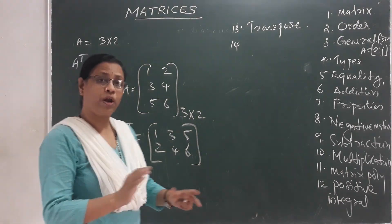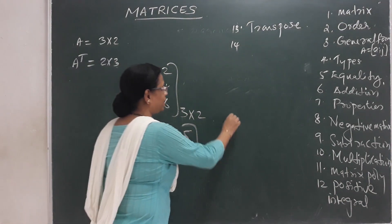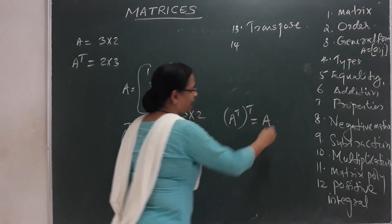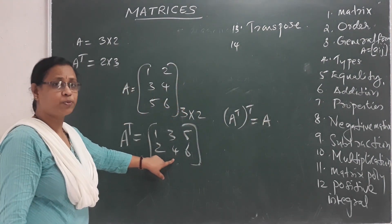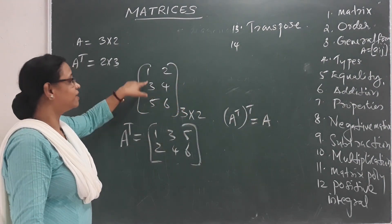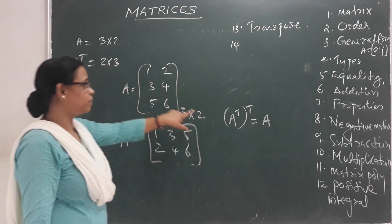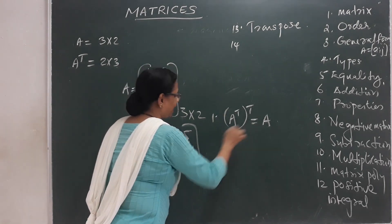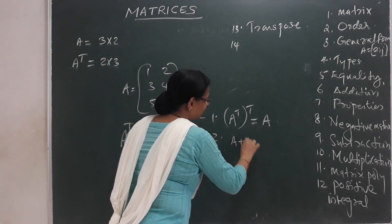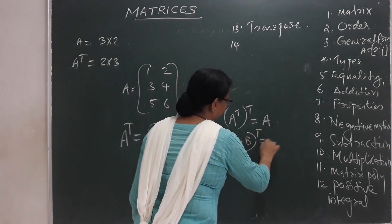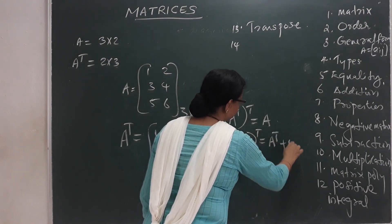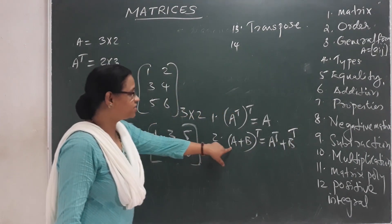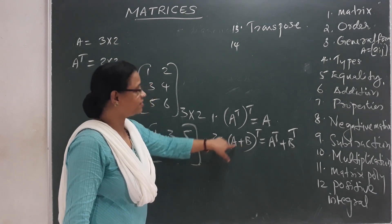In the Transpose, there are these properties. In the first property, the Transpose of a whole Transpose is equal to A. This is the first property: A Transpose whole Transpose is equal to A. The second property: A plus B whole Transpose.